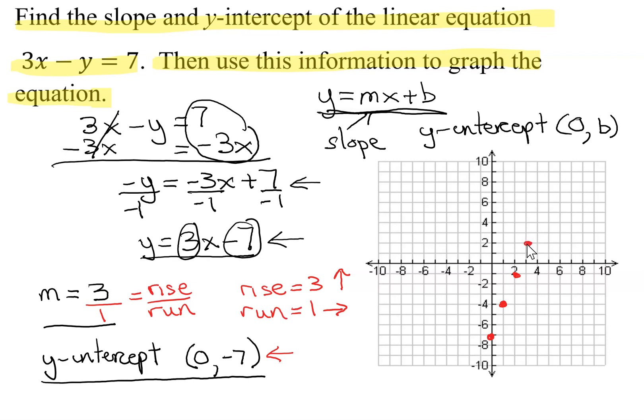And now you try and draw something that vaguely looks like a straight line that goes through all those points. And then you put arrows on both ends. So, there I've graphed the line using the slope and the y-intercept.